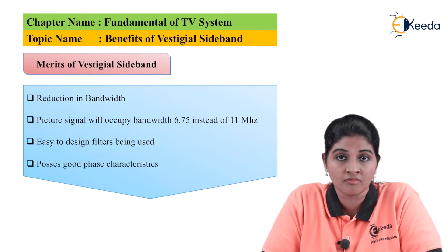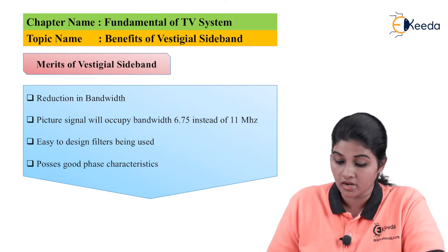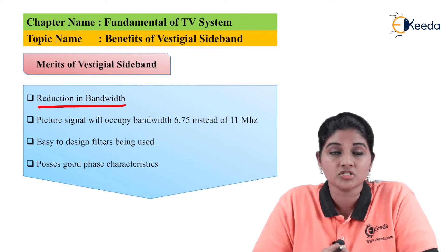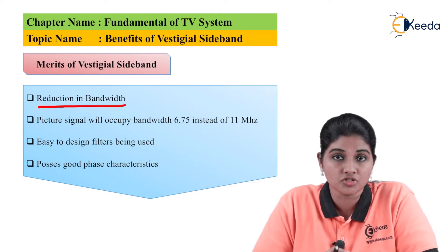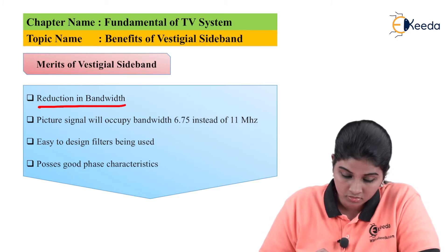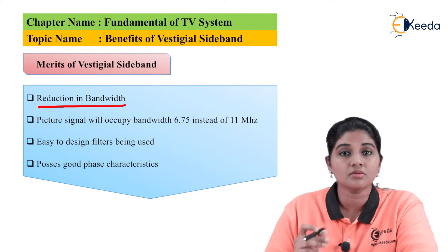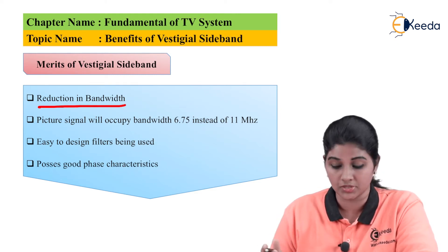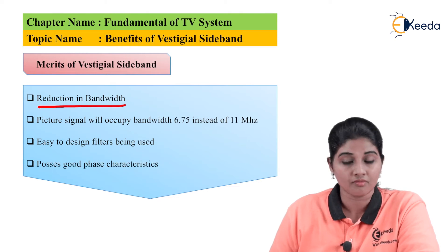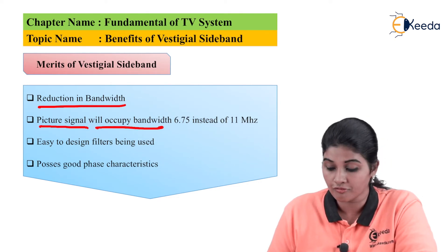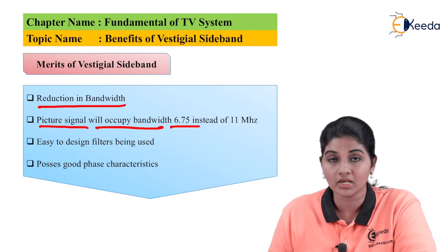The first advantage provided by the vestigial sideband is considered the most important, and that is nothing but reduction in bandwidth. The vestigial sideband provides reduction in bandwidth, which is one of the most important features of VSB. As the bandwidth is reduced, it is as efficient as SSB. The second advantage is that the picture signal will occupy a bandwidth of 6.5 megahertz instead of 11 megahertz.